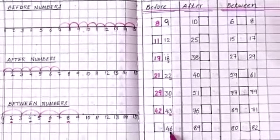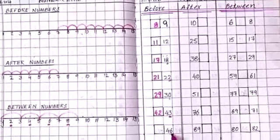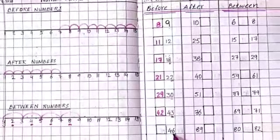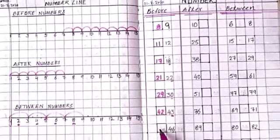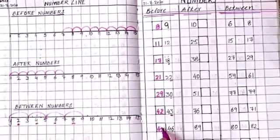Now here, 46. Change 1's place number. 6. Before 6 what is that? Before 6, 5 is there. So 4, 5, 45.